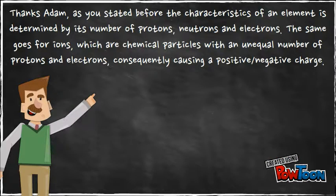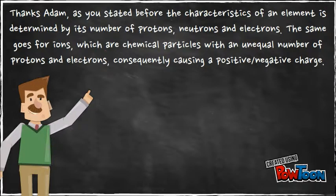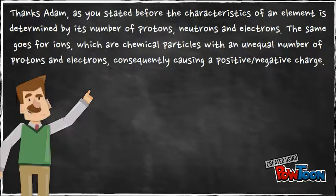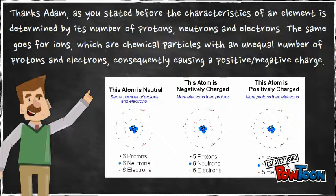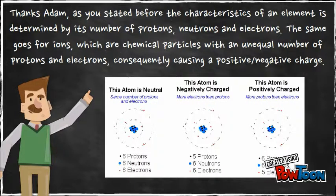Thanks, Adam! As you've seen before, the characteristics of an element are determined by its number of protons, neutrons, and electrons. The same goes for ions, which are chemical particles with an unequal number of protons and electrons, consequently causing a positive or negative charge.